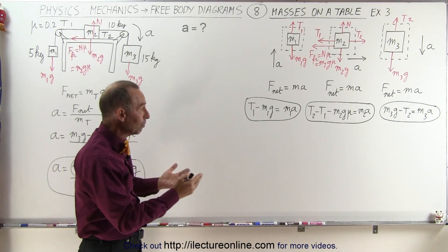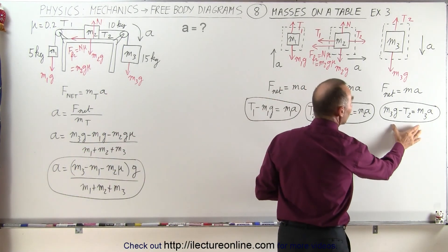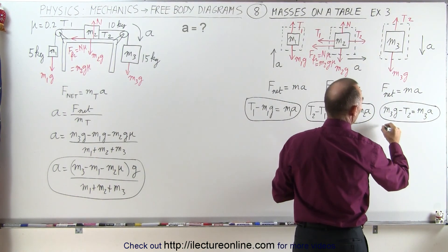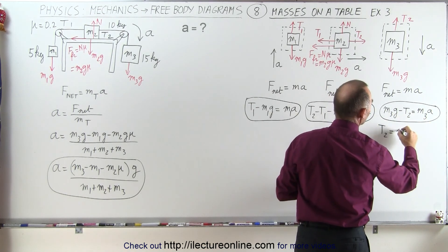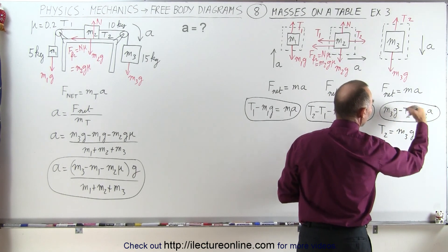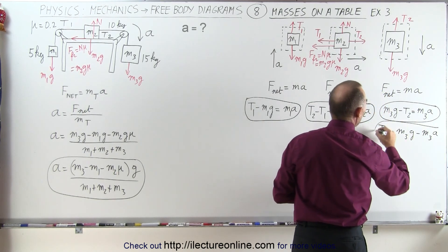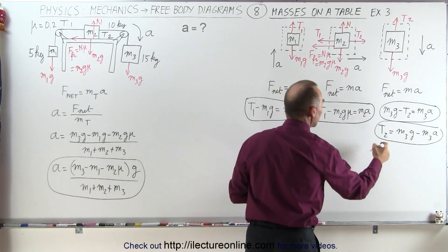We start with taking the third equation and solving this equation for T2. So we end up with T2 is equal to, when we bring it to the right, M3g minus, when we bring this to the left, M3a.